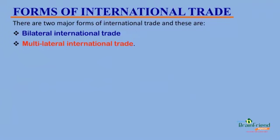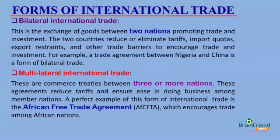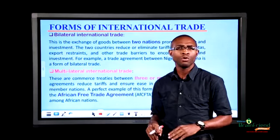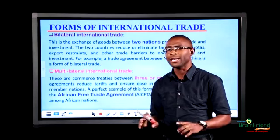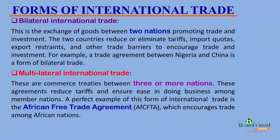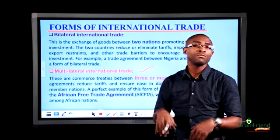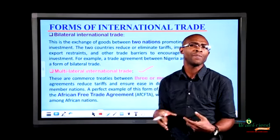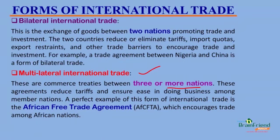There are basically two forms of international trade: bilateral international trade and multilateral international trade. Bilateral international trade refers to trade between two countries only. For example, a trade between Nigeria and Cameroon can be seen as a bilateral trade. Multilateral international trade refers to trade treaties between three or more nations. They have to come into an agreement, and this agreement helps make trade between these trade partners easy. An example of multilateral international trade is the African Free Trade Agreement, which encourages trade among African countries.